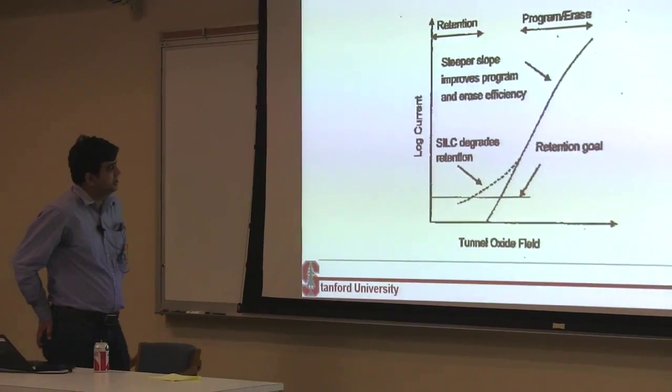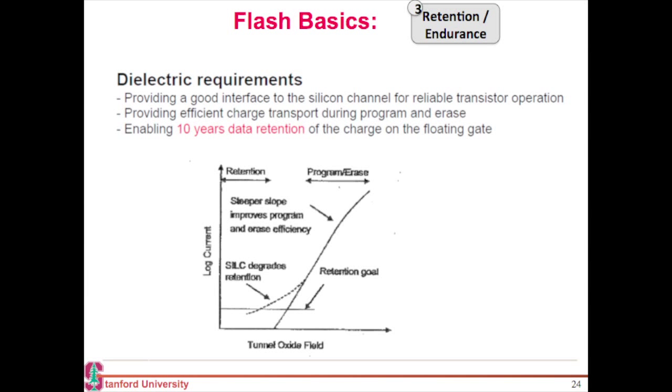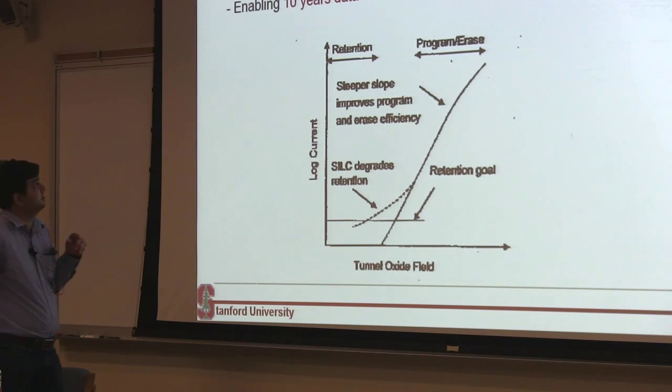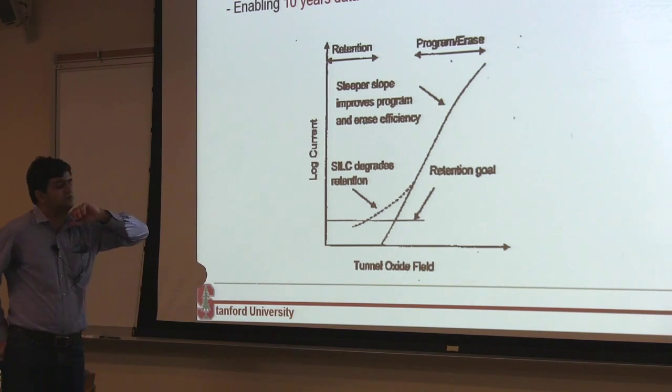This stress induced leakage really tends to limit your retention time. For my retention state, I really want a low floor for my tunneling current. But as I get more and more of this stress induced leakage, this current in the low voltage state goes up. And that tends to limit my retention requirements. So I am no longer able to meet that 10 years of retention requirement.